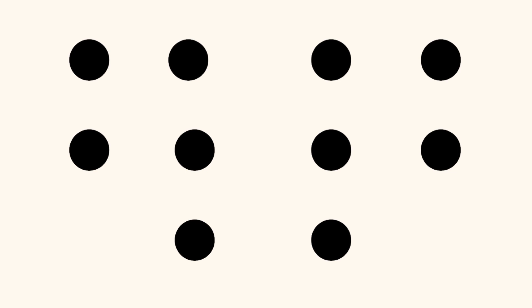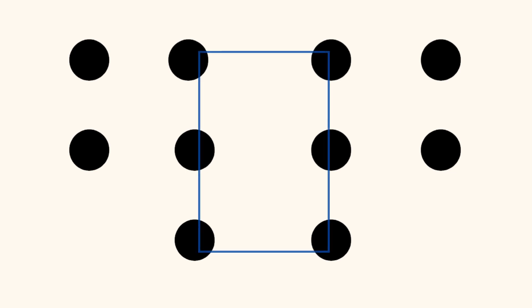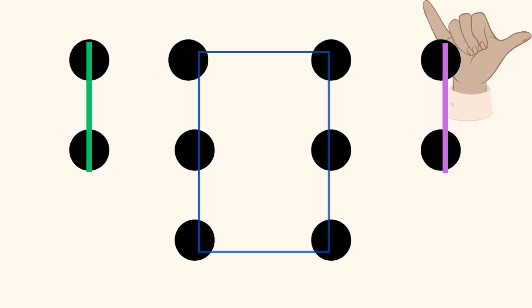Did you see six dots in the shape of a rectangle in the middle and two vertical lines with two dots each — one on the right and the other on the left? You know that six plus the double of two equals ten.